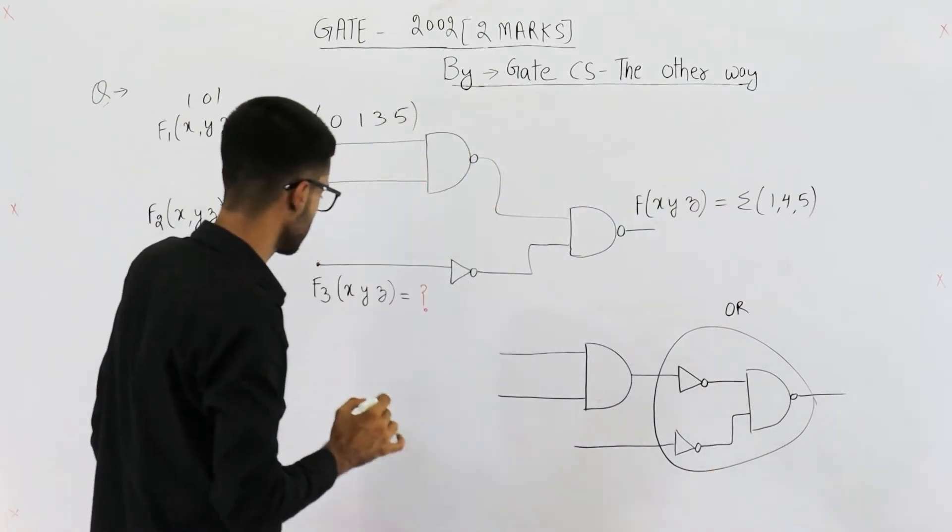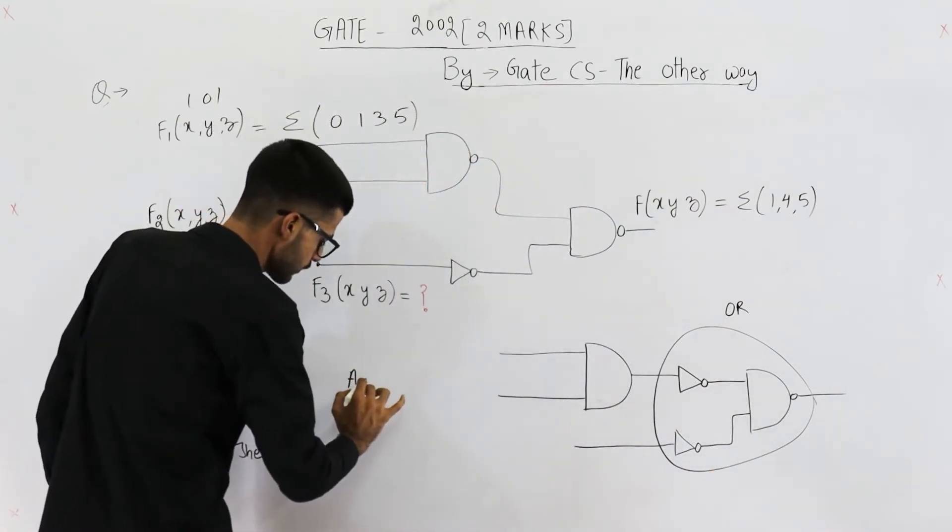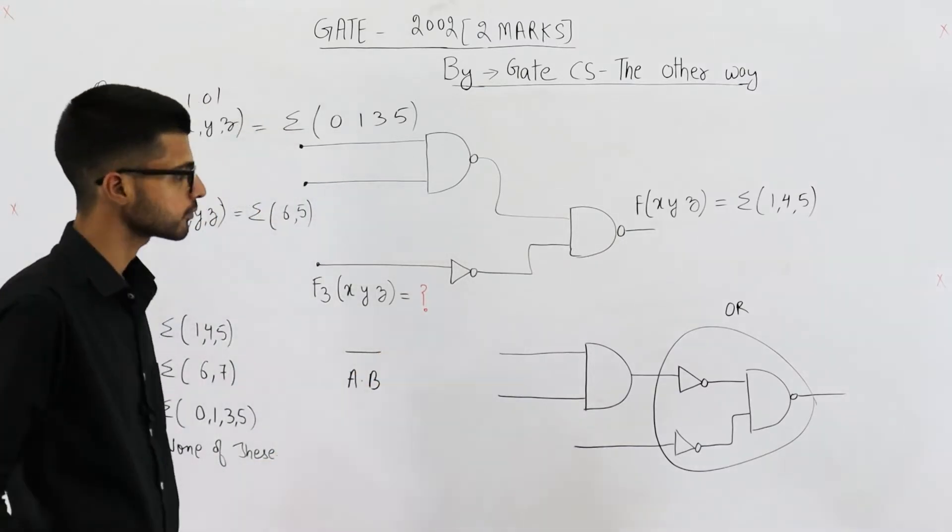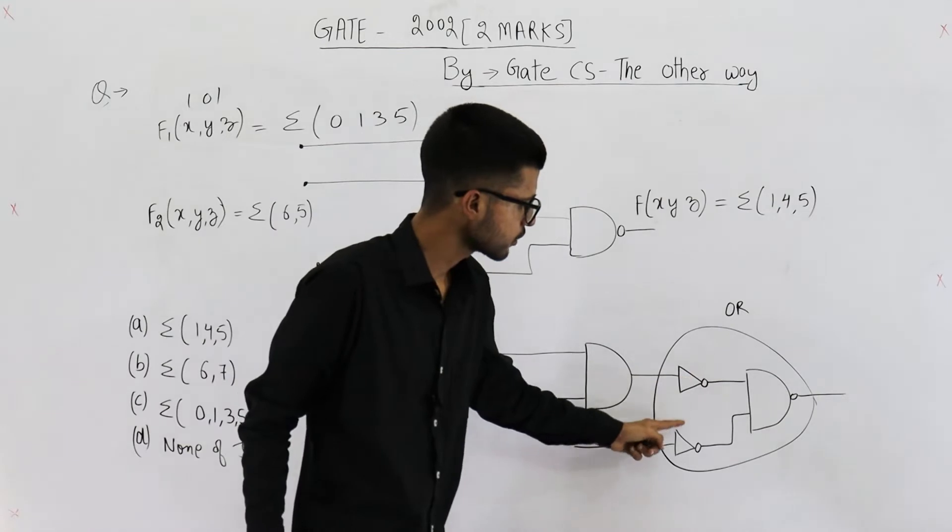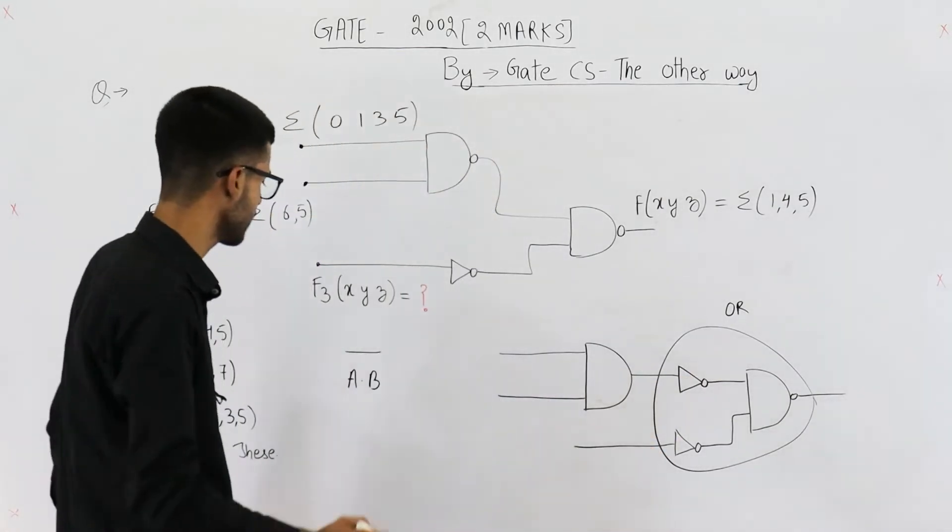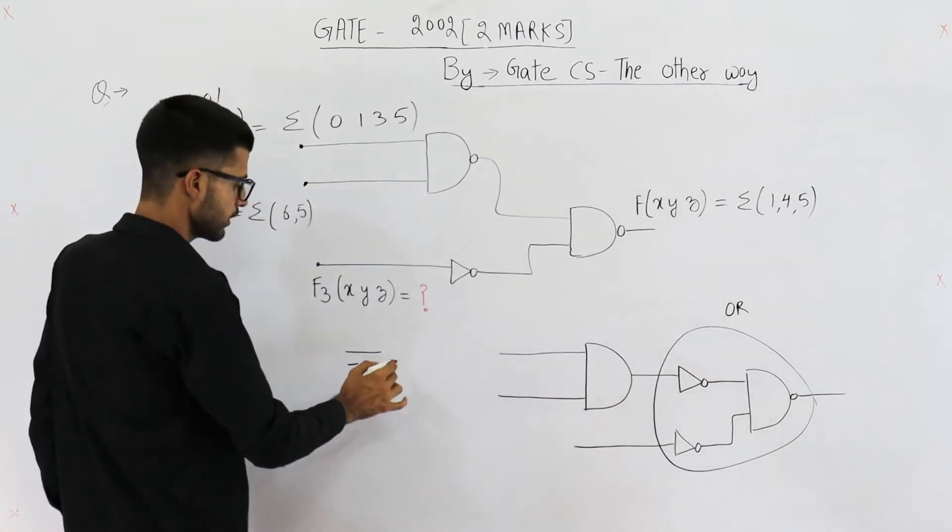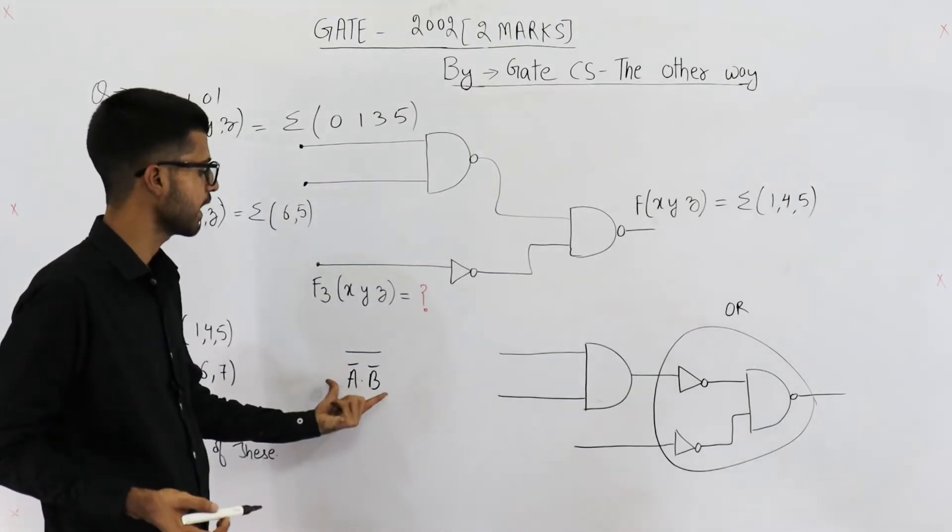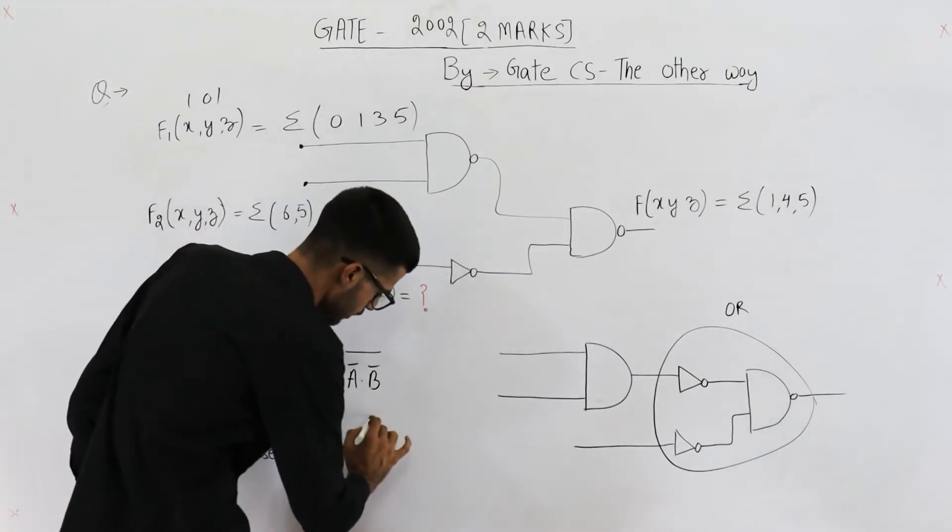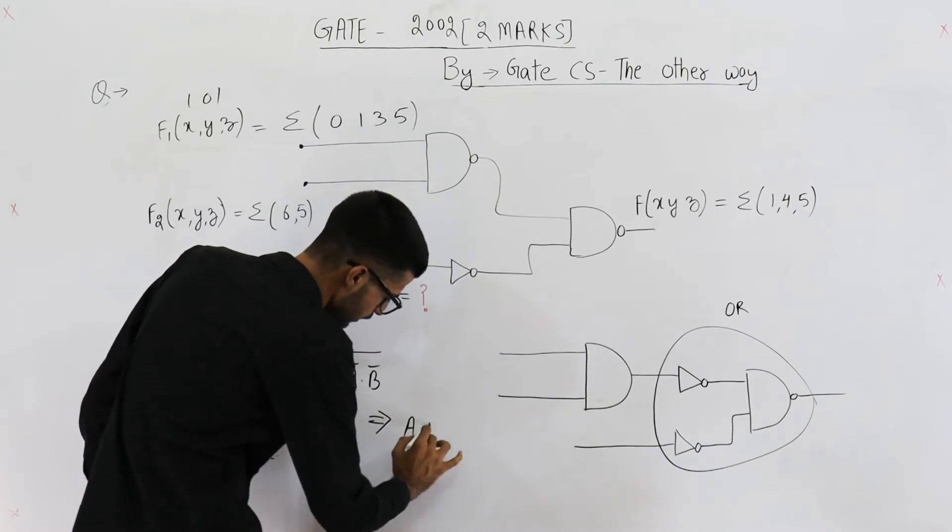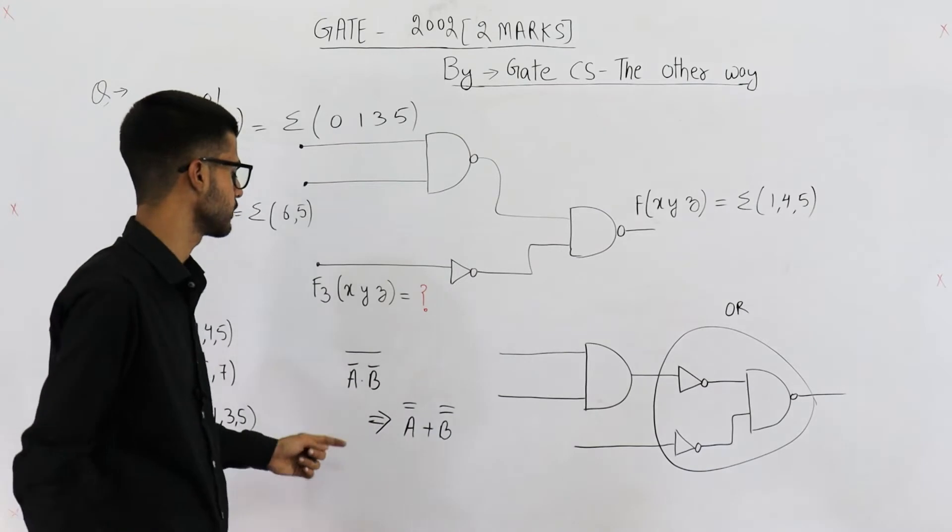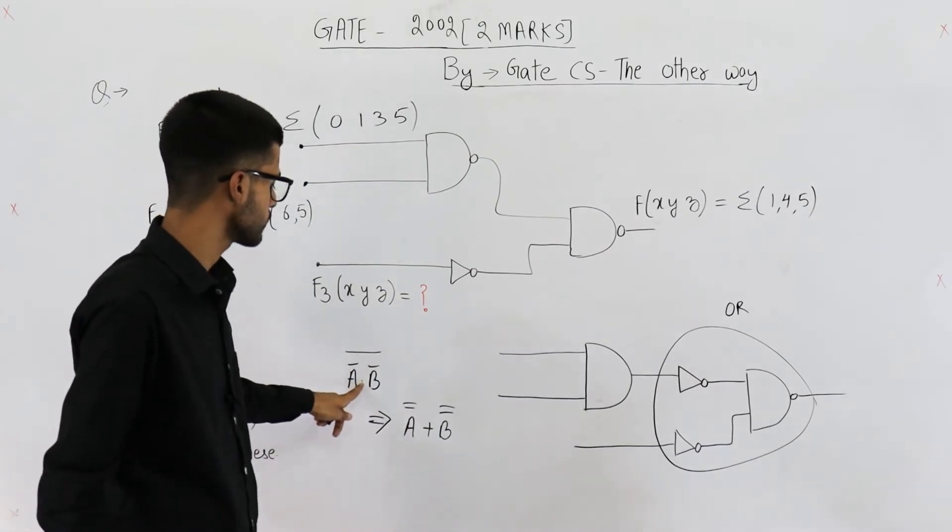This one is an OR gate. How? Expression for NAND is A dot B whole complement. But both of its inputs are complemented. That means A complement and B complement's NAND is performed. If you perform NAND of A complement and B complement, you will get A plus B.